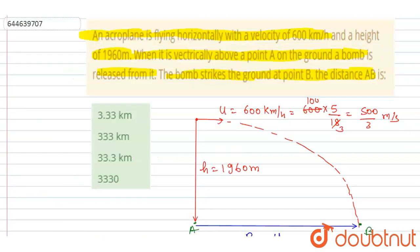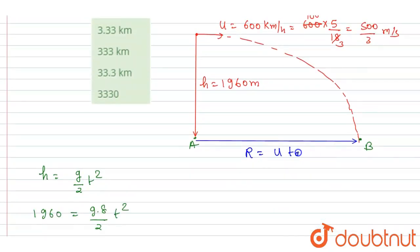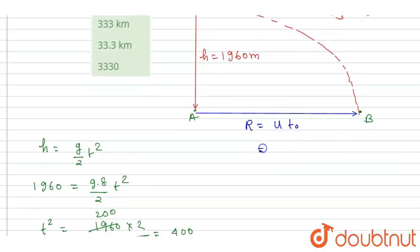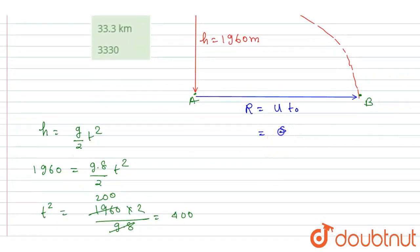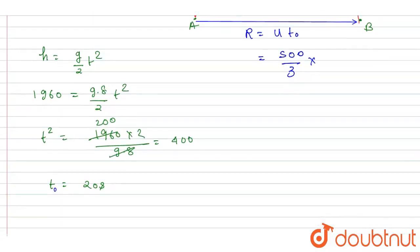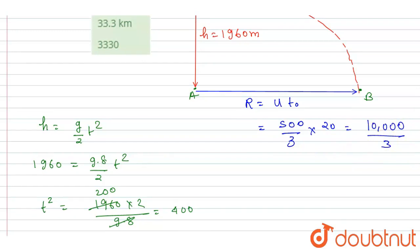Let's say this is the time t naught. So it will be u times t naught, since there is no acceleration in horizontal direction. Here u is given as 500 by 3 and time we calculated is 20 seconds. So if you see, it is 10,000 by 3 meters.